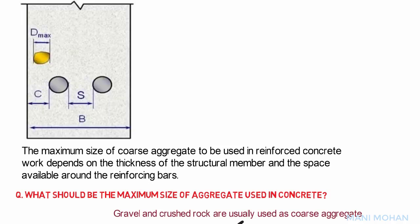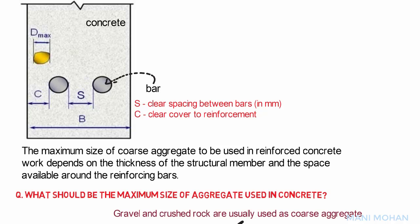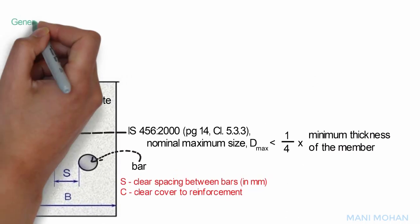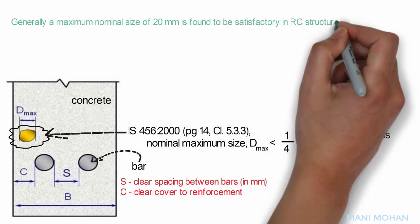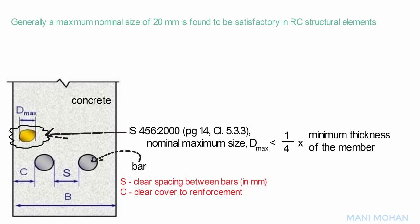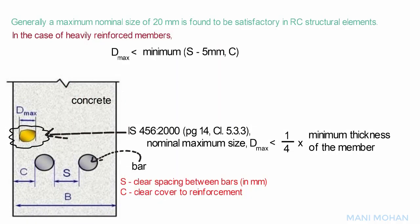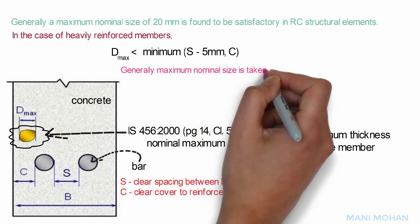In the sketch shown for concrete with bars, s is the clear spacing between bars and c is cover to reinforcement. As per IS 456-2000, clause 5.3.3, the nominal maximum size should not be greater than one-fourth of the minimum thickness of the member. Generally, a maximum nominal size of 20 mm is satisfactory in reinforced concrete structural elements. In the case of heavily reinforced members, it should be restricted to 5 mm less than the minimum clear spacing between bars or minimum cover to reinforcement, whichever is smaller, and the maximum nominal size is frequently taken as 10 mm.